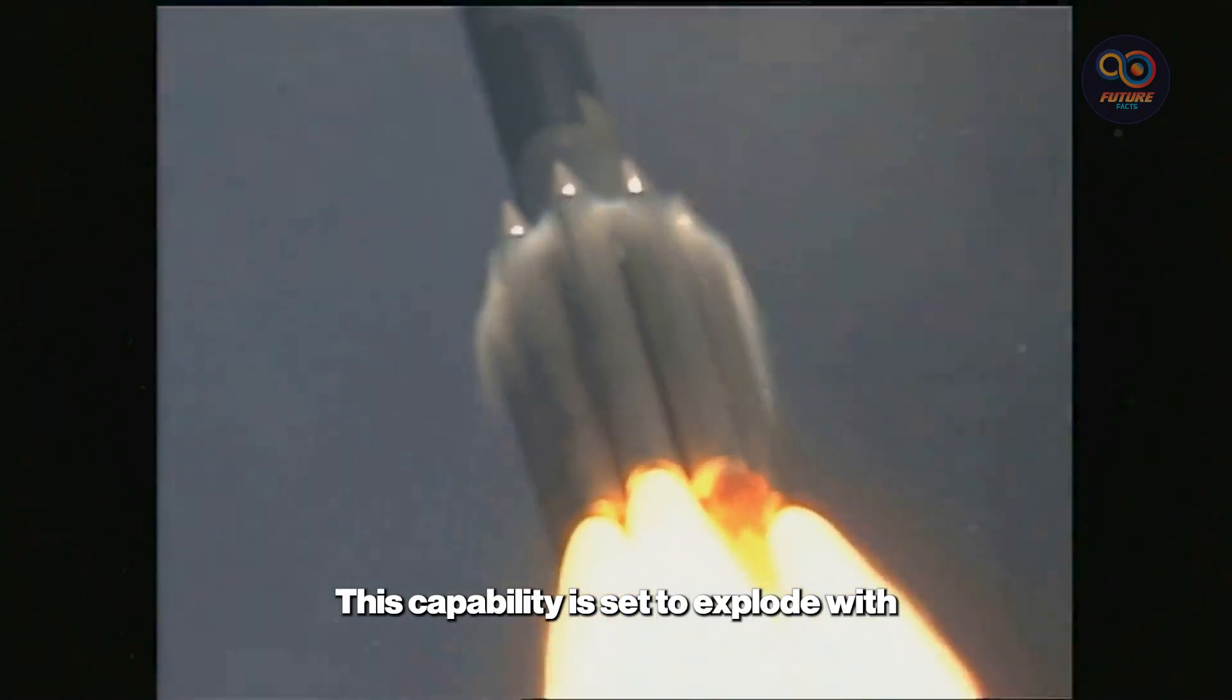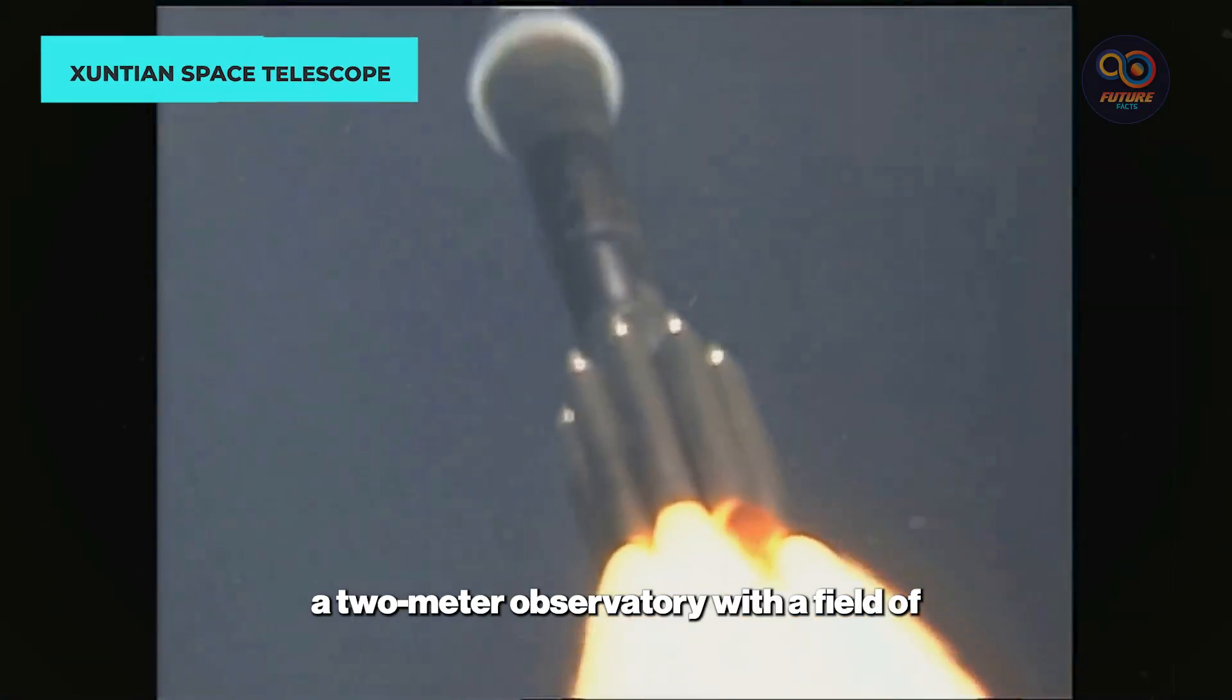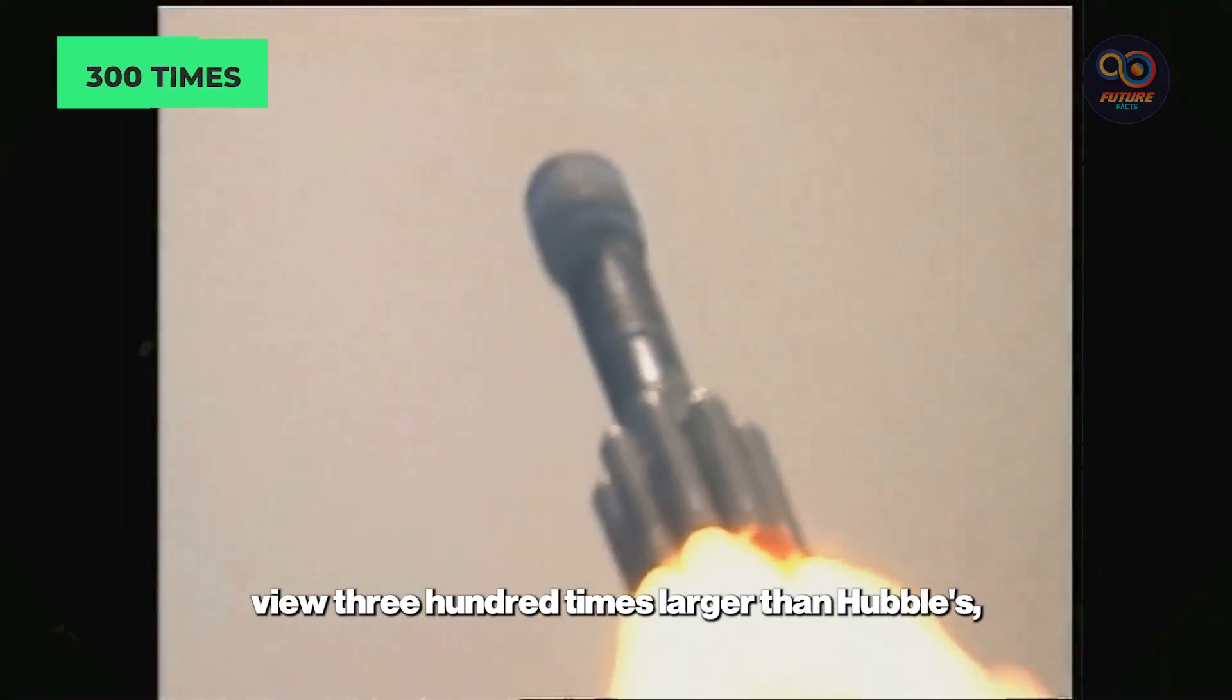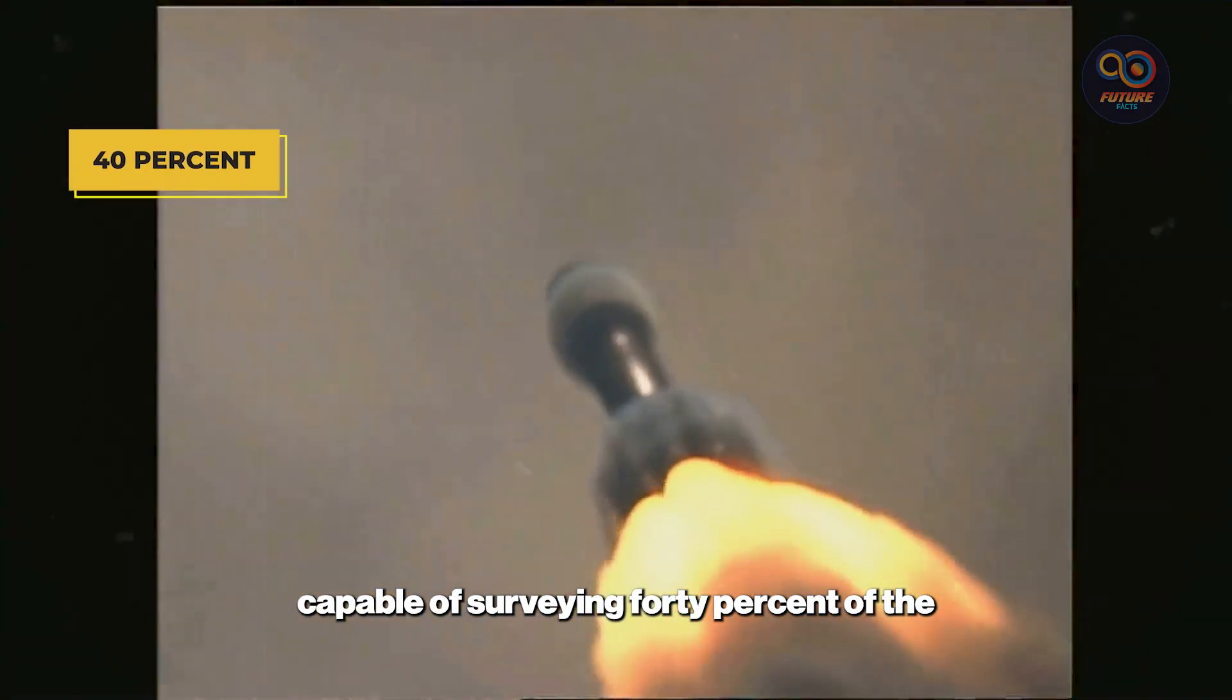This capability is set to explode with the launch of the Zuntian Space Telescope, a 2-meter observatory with a field of view 300 times larger than Hubble's, capable of surveying 40% of the entire sky over its 10-year mission.